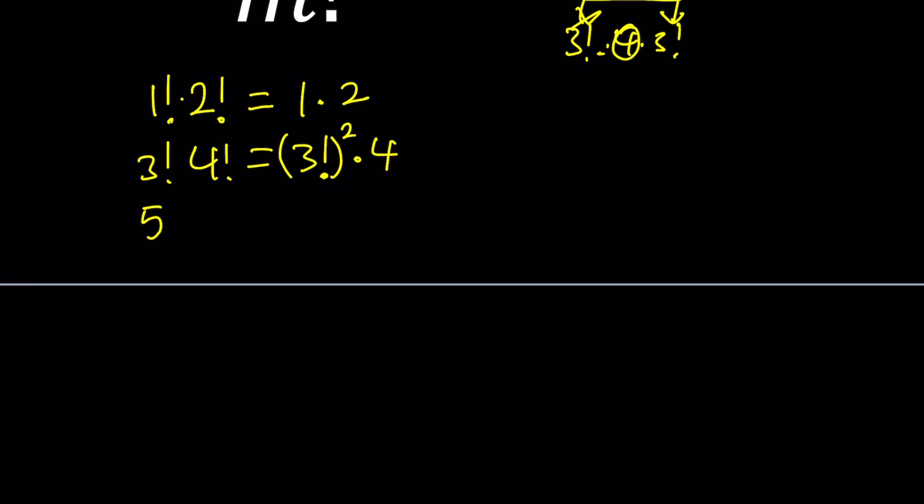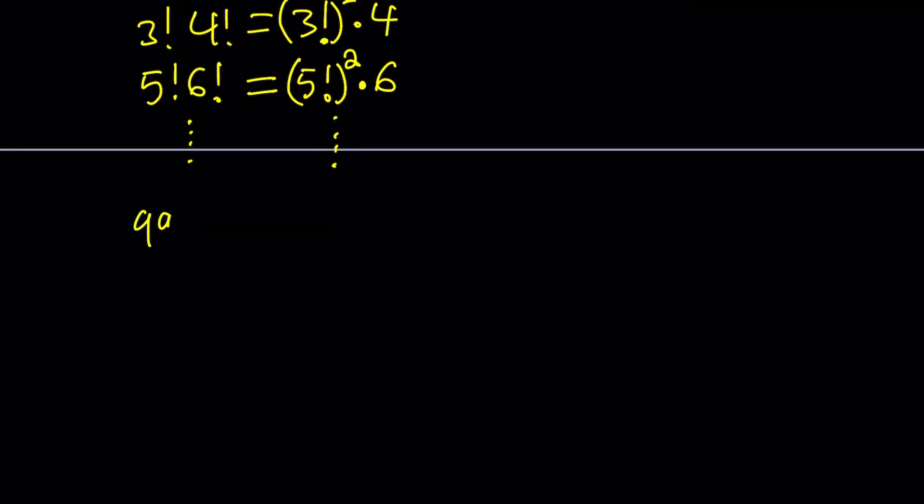And then we're going to do this one more time. Just to get the pattern, you probably need a couple examples. 5 factorial times 6 factorial, and by the same token, it's just going to be 5 factorial squared because that's included in 6 factorial, but you'll also have a leftover 6. So far, so good? Awesome. Now, we're going to continue the pattern, the process, all the way up to the end, which is 99 factorial times 100 factorial. So large, right? And this is going to be 99 factorial squared, for the same reason, times 100. Awesome.